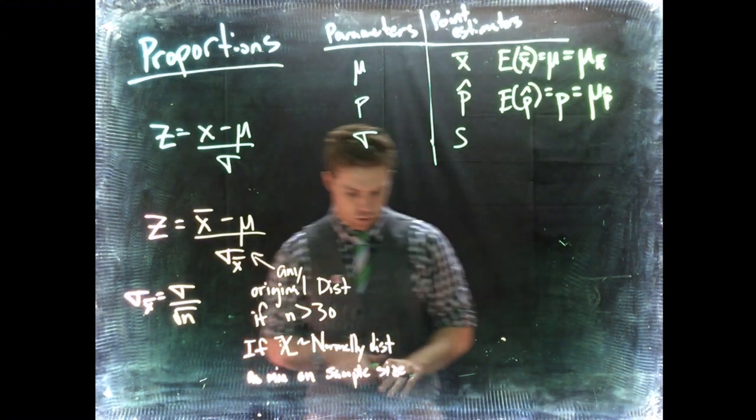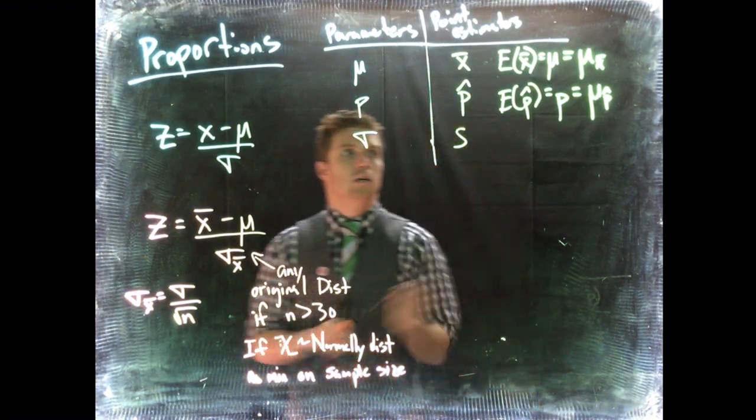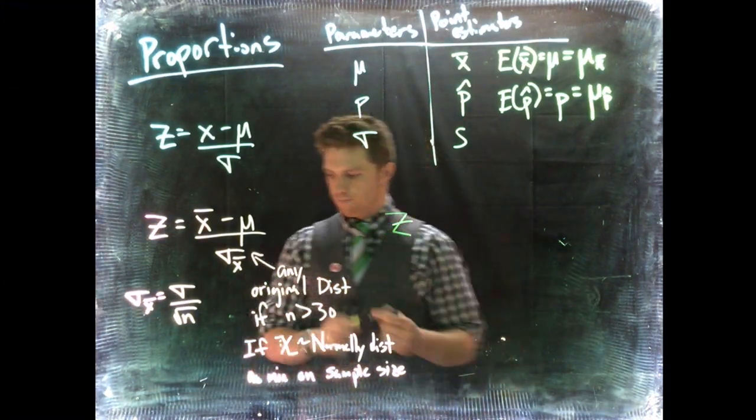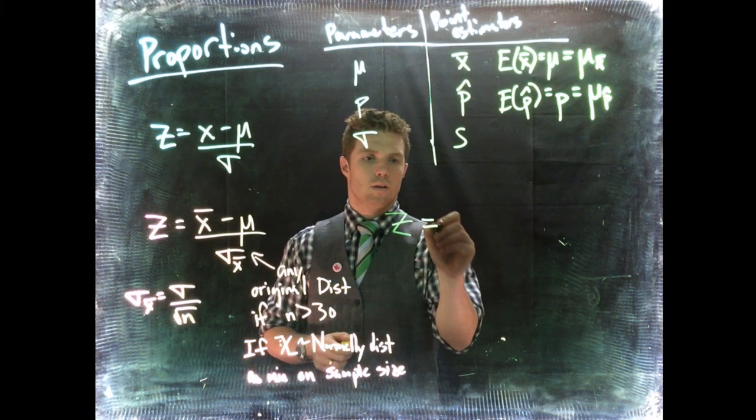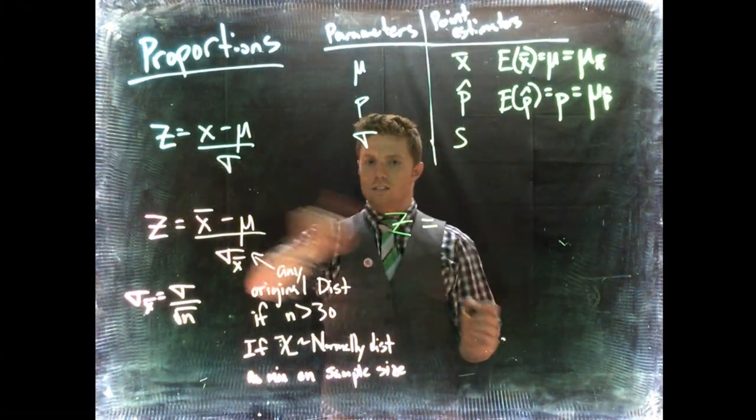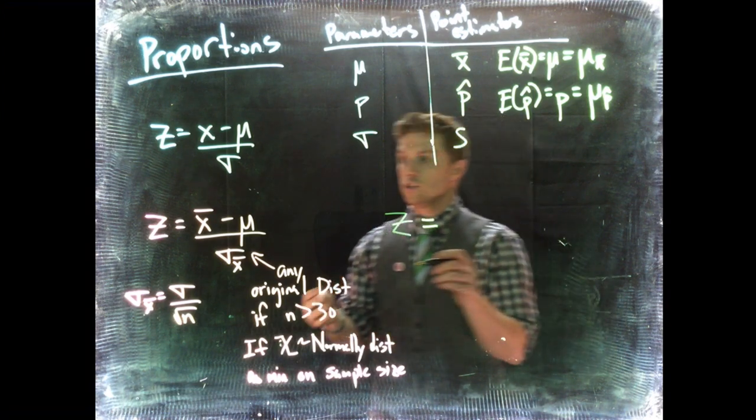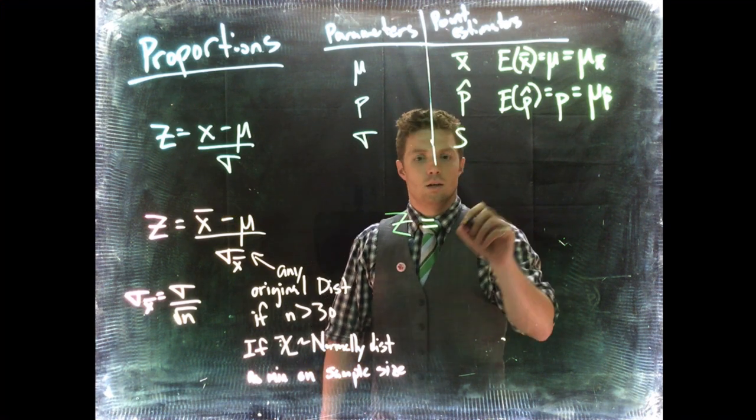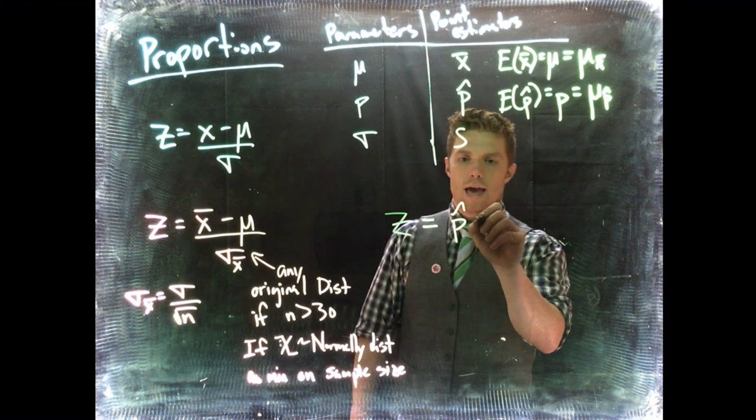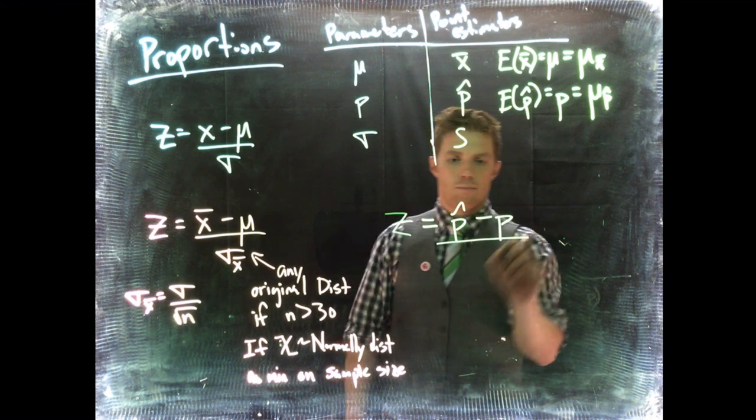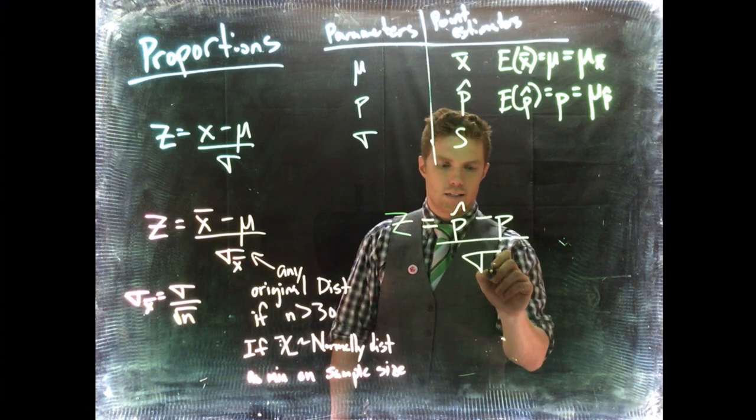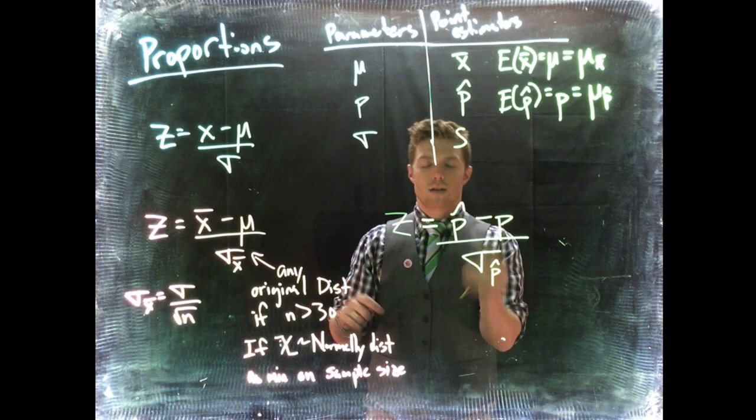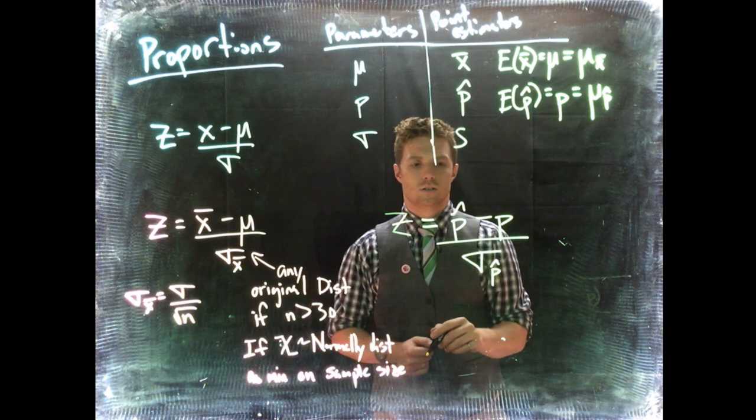Let's convert this equation. We've got Z—these are all ultimately normally distributed. We're going to replace X-bar with P-hat: Z equals P-hat minus P divided by sigma P-hat. We're tweaking this equation to accommodate proportions.